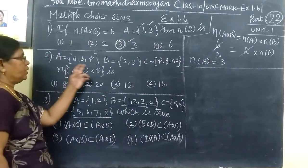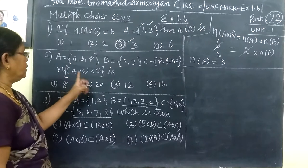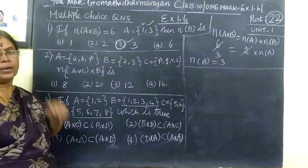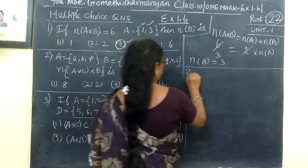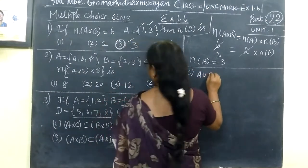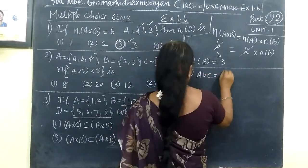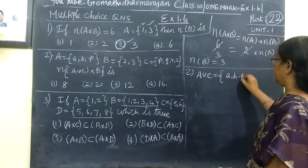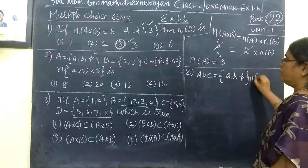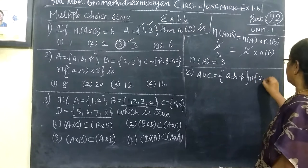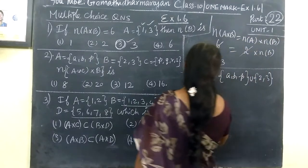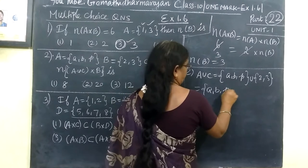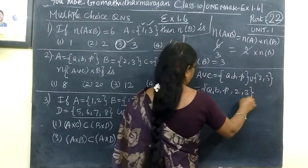Then next one: sets A, B, C. This is why I put C. N(A∪C × B) is equal to 3. Second one: first, A∪C is equal to 3. A union A, B, C — then union C is {2, 3}. So then the union is A, B, C, then {2, 3}.